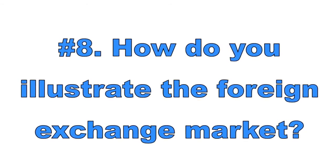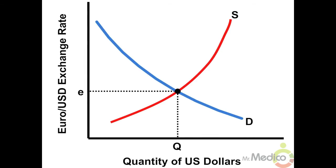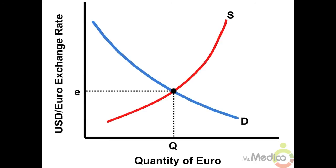Number eight: how do you illustrate the foreign exchange market? To graph a foreign exchange market, you need two different currencies to compare. For the market for US dollars, the quantity of US dollars goes on the x-axis and the foreign currency price of the US dollar goes on the y-axis. If the euro price of a US dollar increases, it takes more euros to buy one dollar — the dollar appreciated and the euro depreciated. The next graph shows the market for euros: if the US dollar price of a euro increases, it takes more dollars to buy a euro, meaning the euro appreciated and the dollar depreciated.